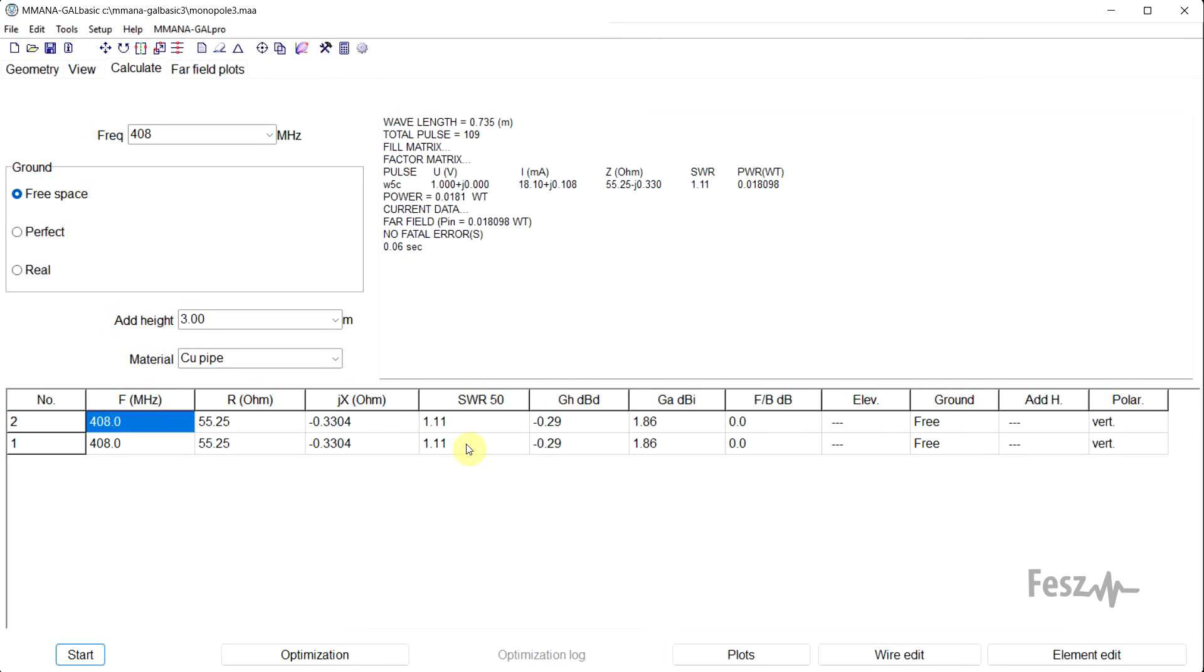In real life, you will always need to adjust things a bit. Anyway, the last thing to observe in this screen is the gain. So it is slightly lower than a dipole, about 0.29 dBs lower.